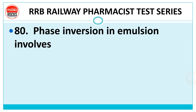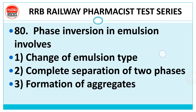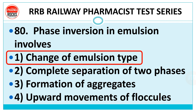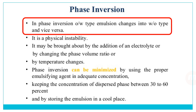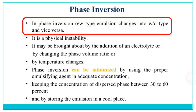Question 80: phase inversion in emulsion involves — change of emulsion type, complete separation of two phases, formation of aggregates, or upward movement of floccules? The right answer is change of emulsion type. Phase inversion means OW type emulsions change into WO type and vice versa. It is a physical instability. Mainly, the type of emulsion changes — OW becomes WO or WO becomes OW.